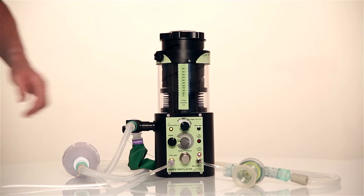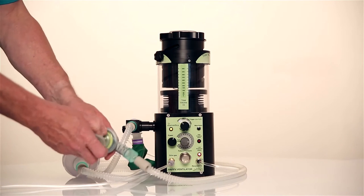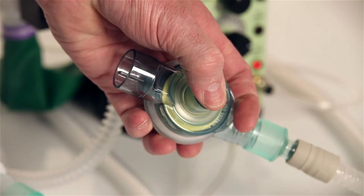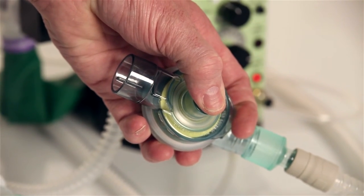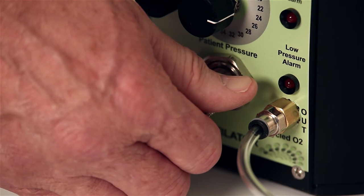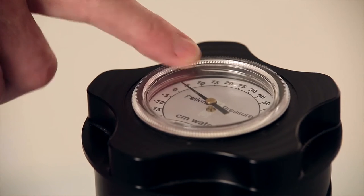To set the initial patient pressure, run the ventilator while occluding the patient valve outlet. Adjust the pressure control until the desired pressure on the gauge is shown.